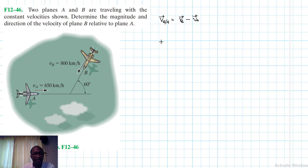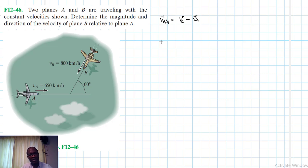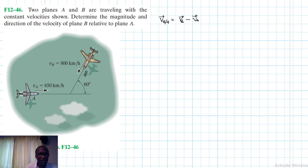VB and VA are absolute velocities because they are observed from a fixed reference frame. The velocity VB/A is a relative velocity because it is observed from a translating reference frame, which in our case is plane A.